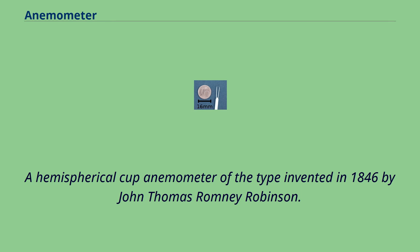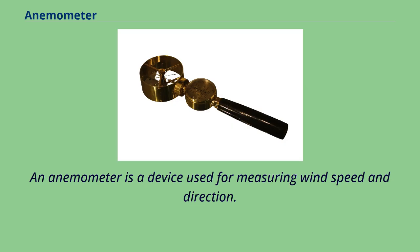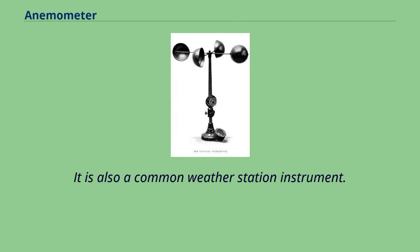A hemispherical cup anemometer of the type invented in 1846 by John Thomas Romney Robinson. An anemometer is a device used for measuring wind speed and direction. It is also a common weather station instrument.